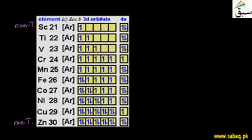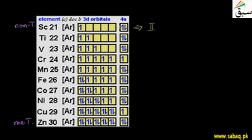First of all, let us talk about scandium. Scandium's electronic configuration is 3d¹ 4s². Here, 4s will lose electrons first. If 2 electrons are lost from scandium, the configuration becomes 3d¹ 4s⁰, showing oxidation state +2. If the remaining d electron is also lost, it shows oxidation state +3. So scandium usually shows oxidation states +2 and +3.